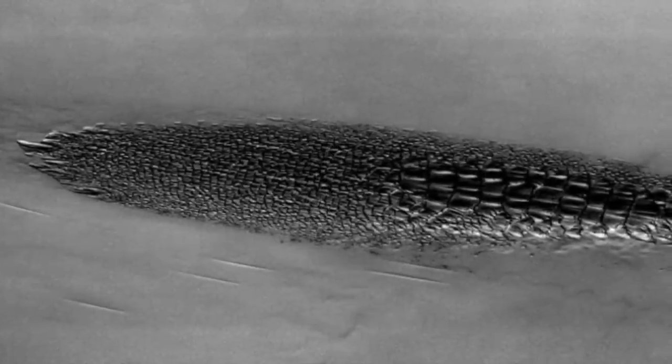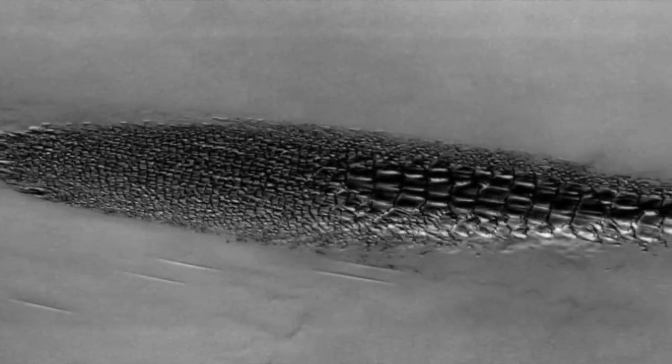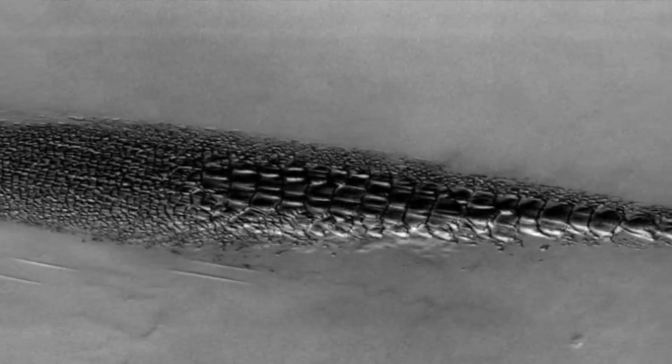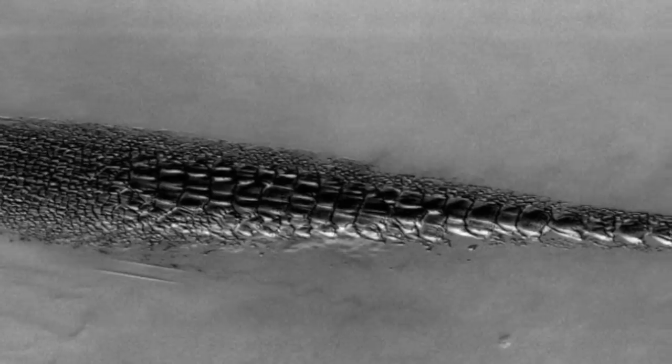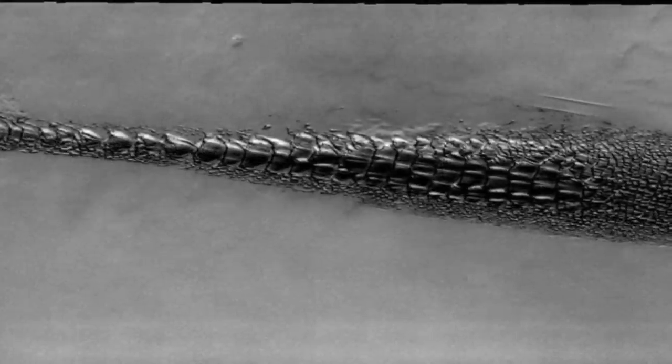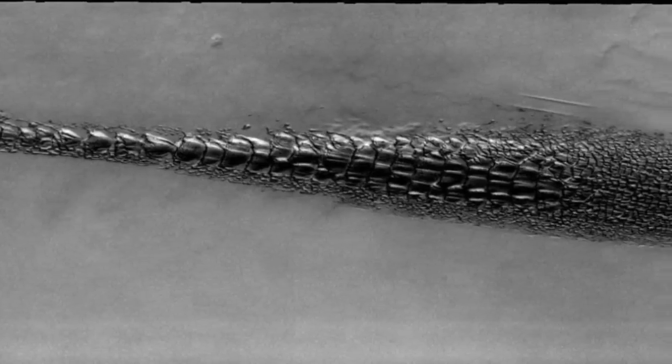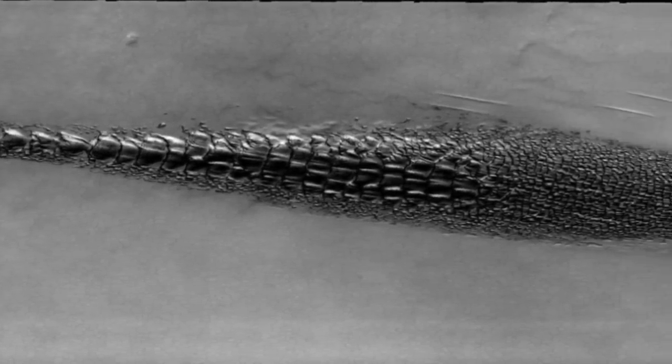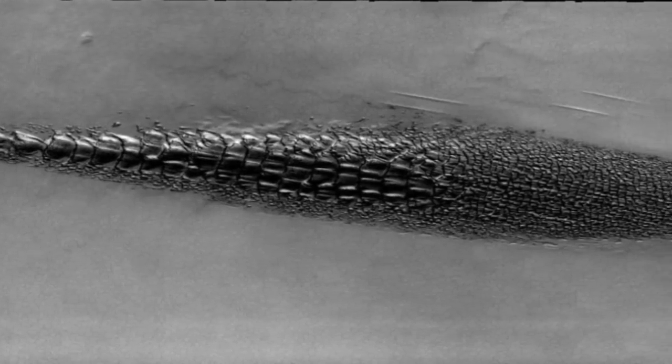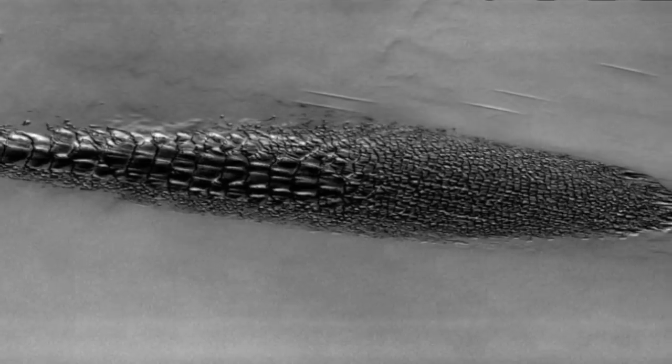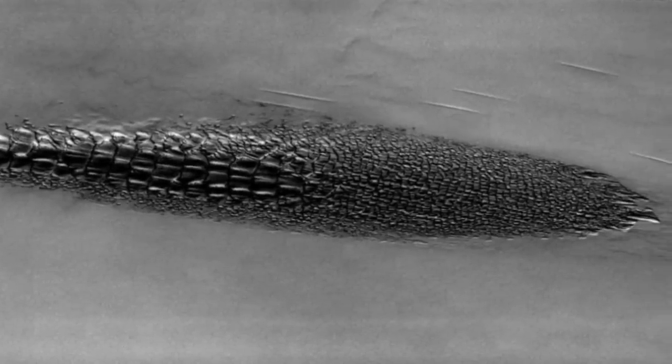Note this visual image has not been radiometrically nor geometrically calibrated for this release. An empirical correction has been performed to remove instrumental effects. A linear shift has been applied in the cross-track and down-track direction to approximate spacecraft and planetary motion. Fully calibrated and geometrically projected images will be released through the planetary data system in accordance with project policies at a later time.